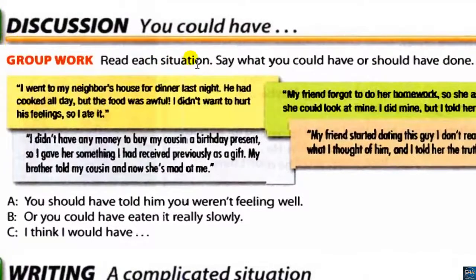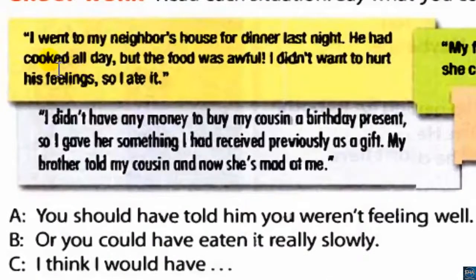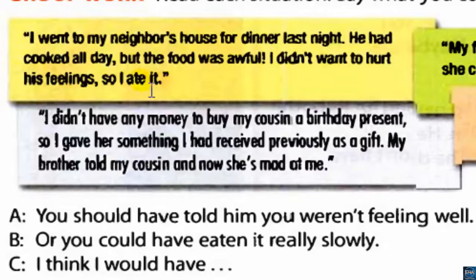Exercise number 12, Discussion — 'You Could Have.' Group work: Read each situation and say what you could have or should have done. Example: 'I went to my neighbor's house for dinner last night. He had cooked all day, but the food was awful. I didn't want to hurt his feelings, so I ate it.' Say what you could have or should have done.